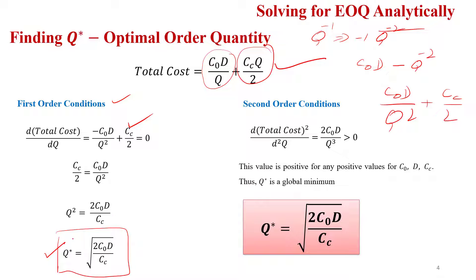To confirm this is a minimum, we take the second-order derivative, which must be greater than zero. Mathematically this indicates the total cost function is convex, and at Q* the function yields the minimum total cost.